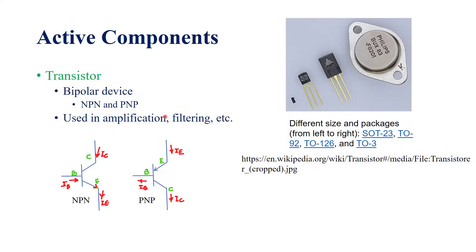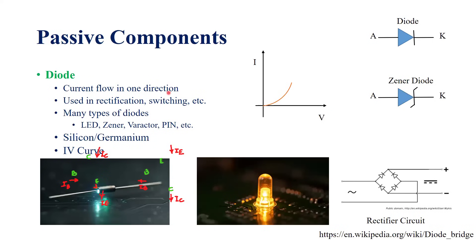Having covered active components, it's time to talk about passive components. The definition of a passive component is that it does not introduce any gain into the circuit — it does not introduce, inject, control, or modulate energy into the circuit. A best example is a diode, which is a simple PN junction semiconductor device with two pins. One is called the anode and the other is called the cathode.